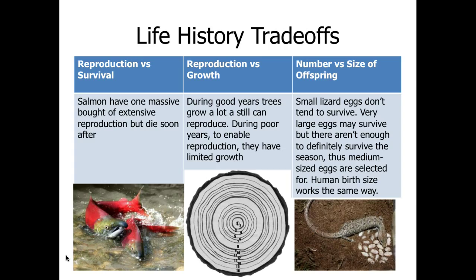Another trade-off is the number of offspring versus the size of offspring. An organism cannot both have a large number of offspring and have large-sized offspring — there has to be a trade-off. In the reptile world, eggs that are very small are unlikely to survive to hatch, while eggs that are very large are more likely to hatch, but the organism cannot have as many large eggs. This forces a stabilizing shift towards a medium-sized egg. You can see with the lizard shown that all eggs are approximately the same size — none very small, none very large.